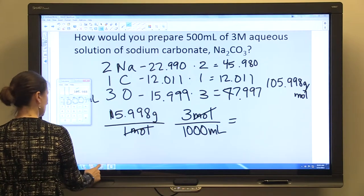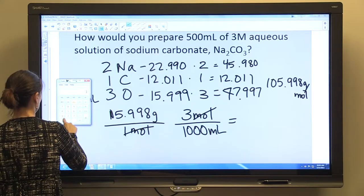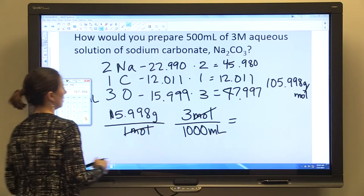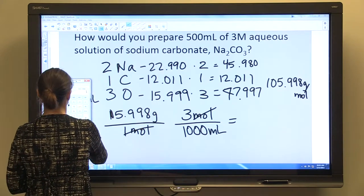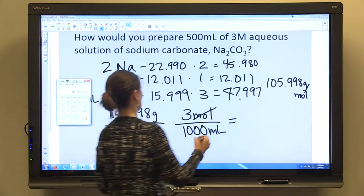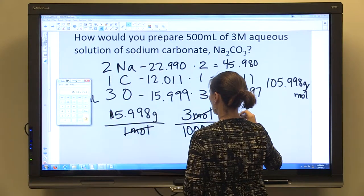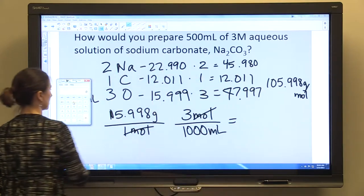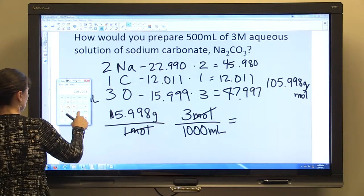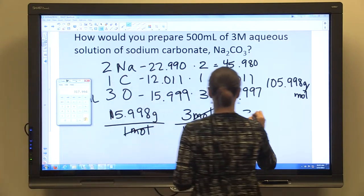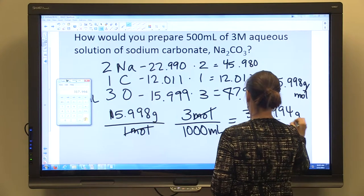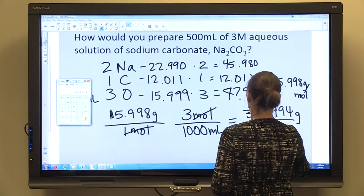So we know that the moles are going to cancel. And we are going to do 105.998 times three. We'll have 317.994 grams per 1,000 milliliters.